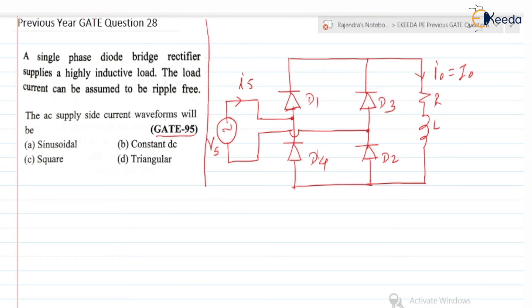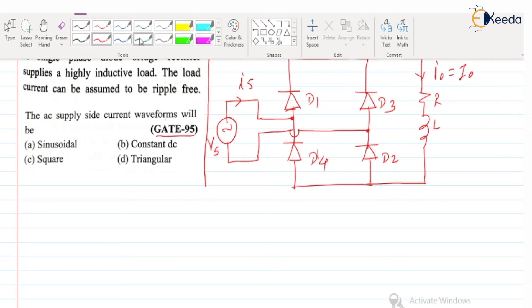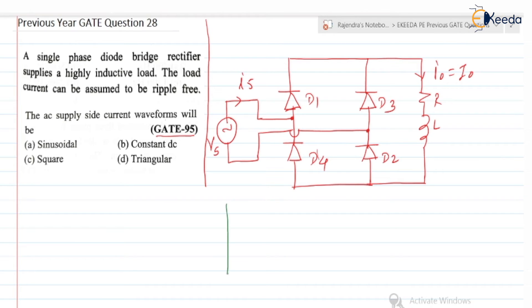So as the load is highly inductive, I0 is constant. So if you check, can we draw the waveform of I0? Yes, I0 is a constant waveform, constant current. So this is omega T, and this is constant I0.